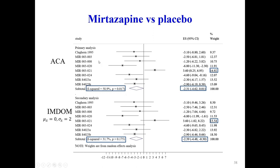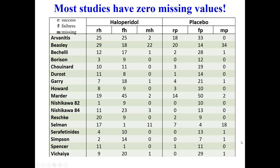In the mirtazapine versus placebo example with eight studies, the first analysis is the available case analysis — a special case of our model where lambda equals zero. If we make a small departure from missing at random by assuming lambda has mean zero but some variance, the pooled effect moves to the left favoring mirtazapine. The fifth study with a high missing rate has its weight reduced from 15% to 13.5%. Although within-study variations increase, the pooled result becomes more certain because heterogeneity reduces from about 60% to 30% I-squared.